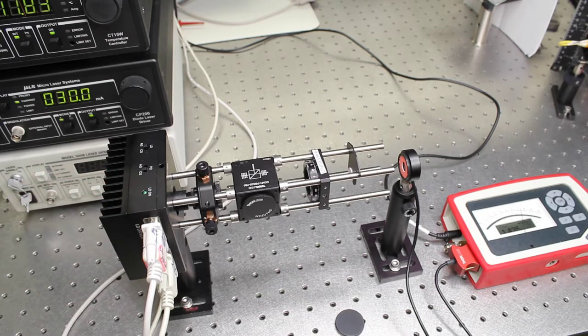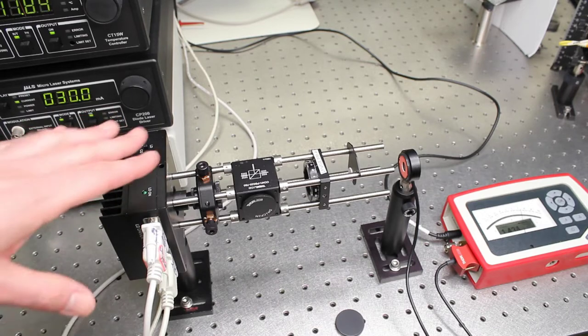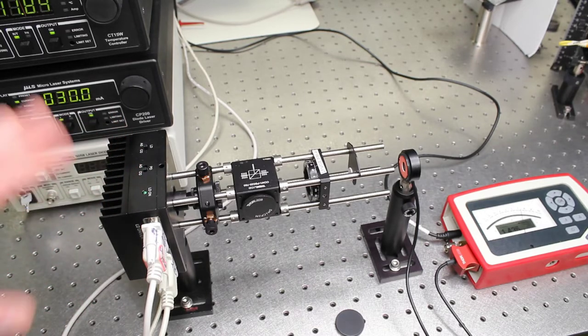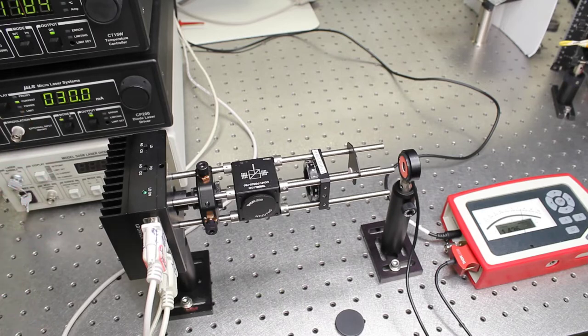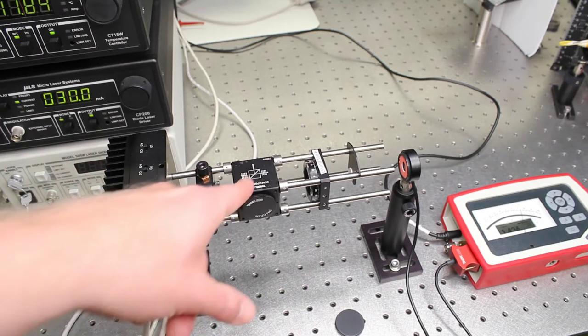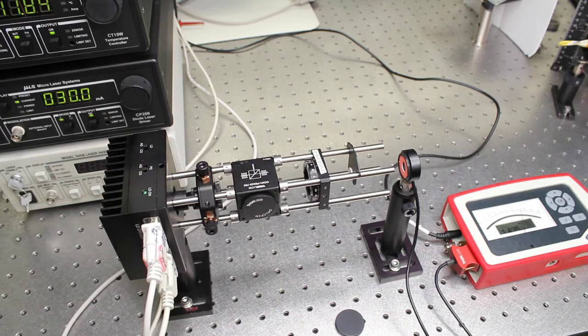And the laser diode itself is partially polarized. And the orientation of it kind of depends on exactly how this thing came and how I put it in and how it's aligned. And so even though the laser diode itself is partially polarized, I'm using this cube polarizer to definitely polarize it quite horizontally.